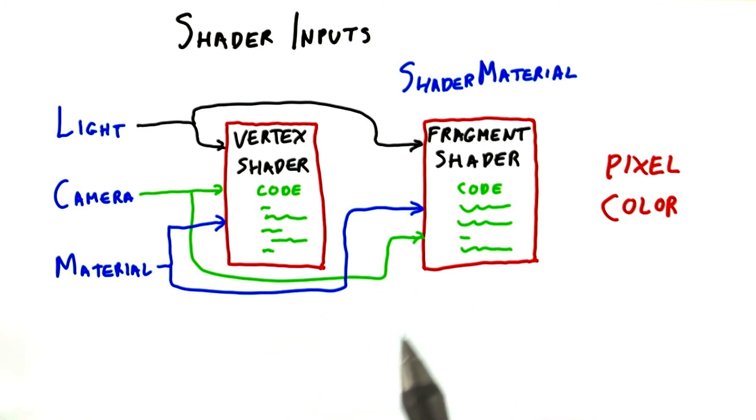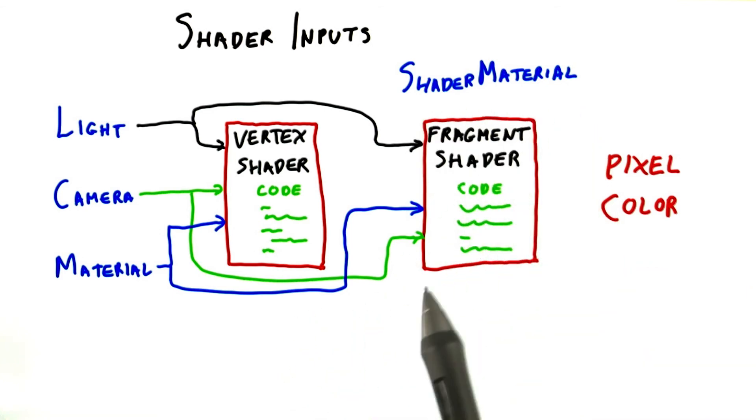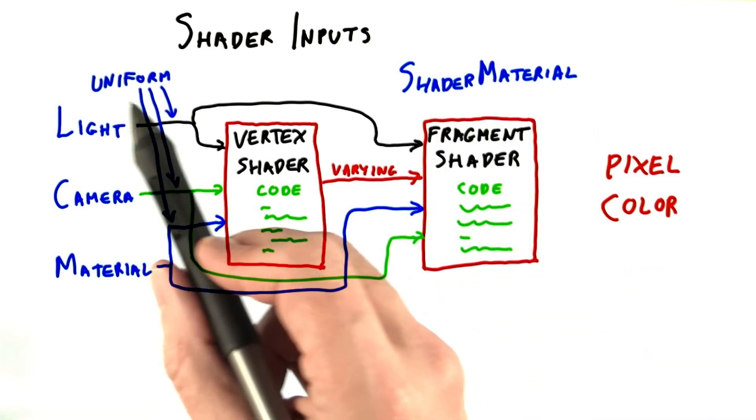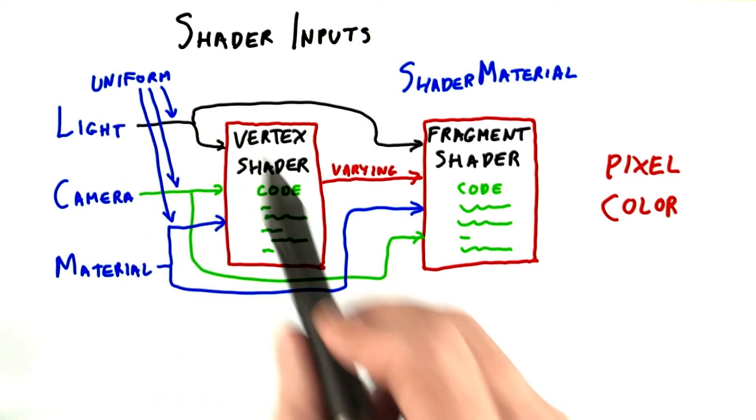However, you can create and modify your own materials by using Three.js's shader material. Vertex and fragment shaders have similar structures. You first define the inputs to the shader. There are two kinds of declarations in Three.js: uniform and varying.